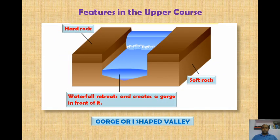The first feature seen in the upper course is a gorge, or I-shaped valley. This kind of valley is formed due to erosion by the river. In the upper course, the river engages mainly in vertical erosion. Due to erosion of soft rock and hard rock and the retreat of a waterfall, a gorge is created.